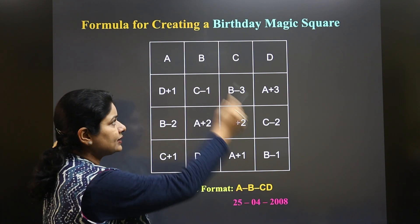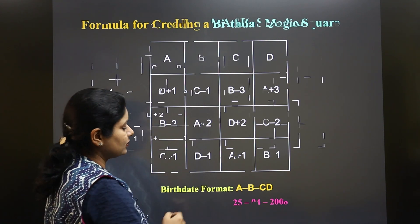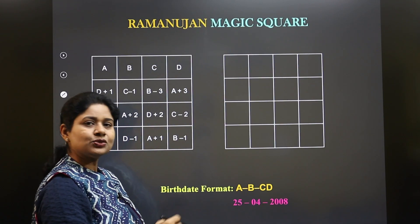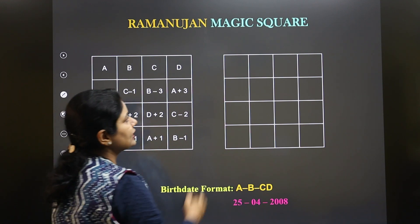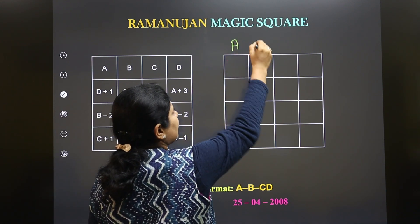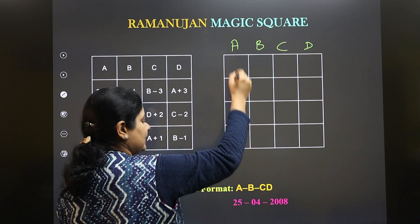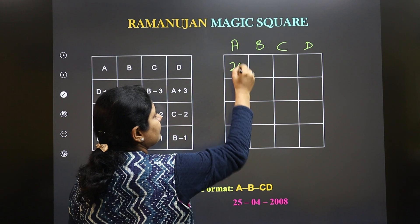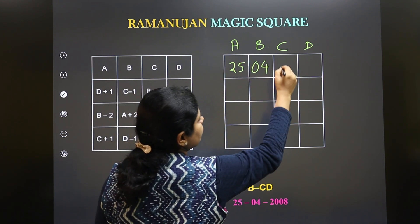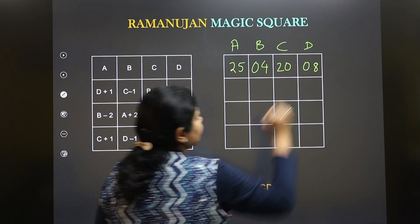Now taking this formula, let's make a magic square for the date 25th April 2008. We can place it as A, B, C, D on top: A will be 25, B will be the month 04, C will be 20, and D will be 08.